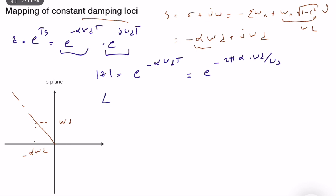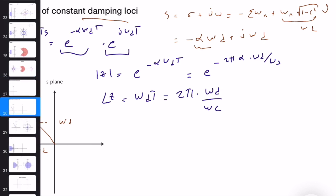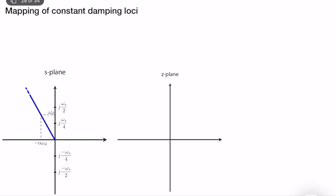Looking at the phase: angle(z) = omega_d T, which converts to 2 pi omega_d / omega_s. So z = e^(-2 pi alpha omega_d / omega_s) with phase equal to 2 pi omega_d / omega_s. Using sampling frequency rather than sampling time provides a better mathematical framework.